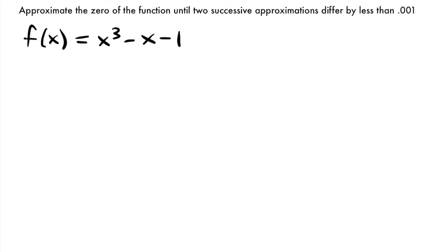The hardest part of a problem dealing with Newton's method is figuring out what your first guess is going to be — what is our value of x1? You want to find a value that when plugged into this function gives you a positive number, and also a value that gives you a negative value. If you go from a negative value to a positive value, there must have been a point somewhere that hit zero — the function must have crossed the x-axis between those two values.